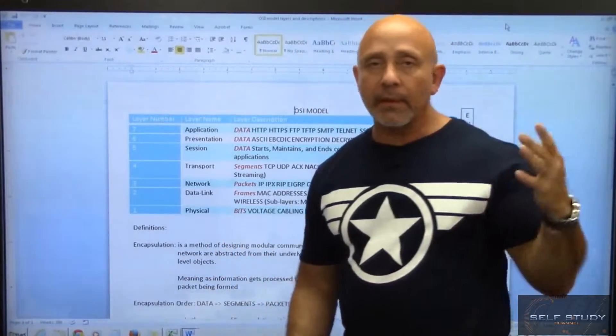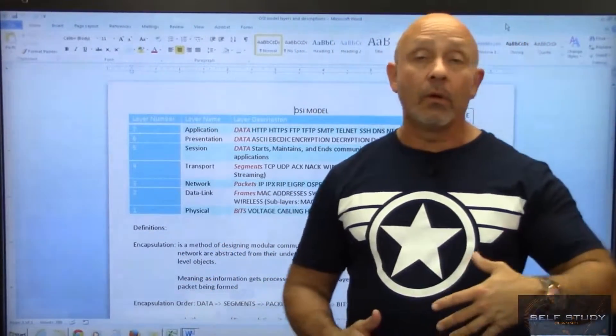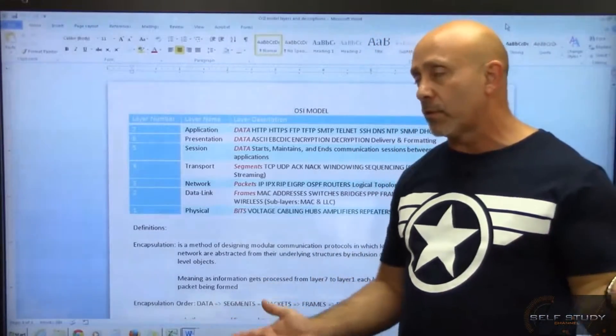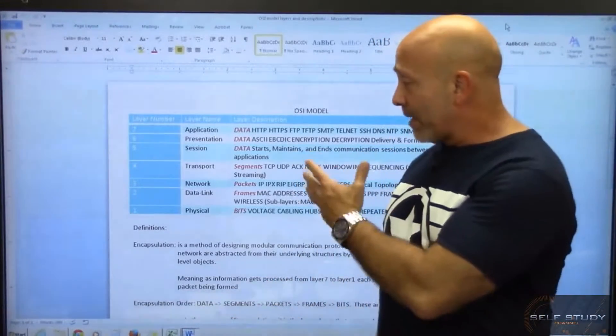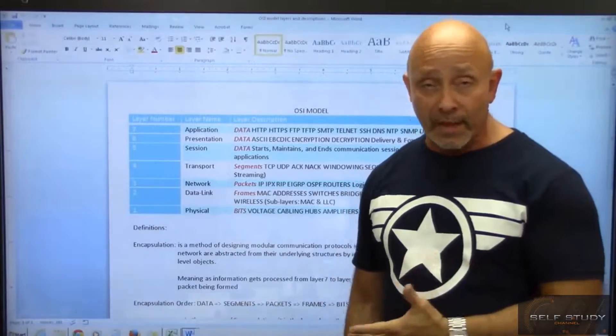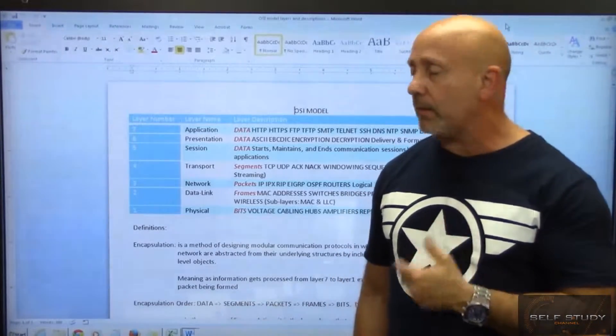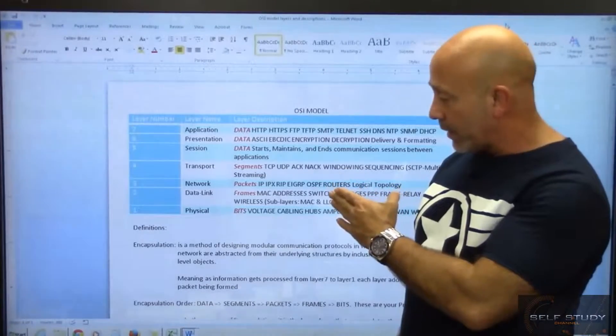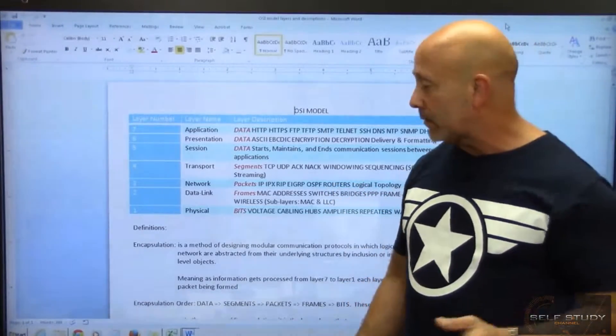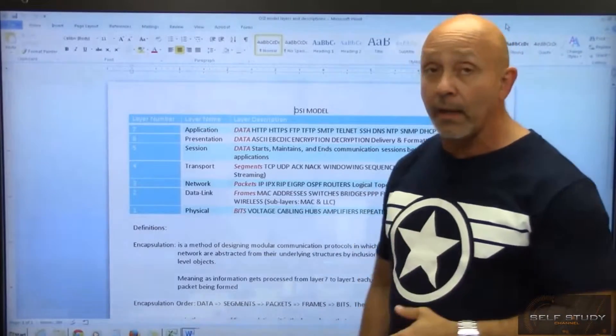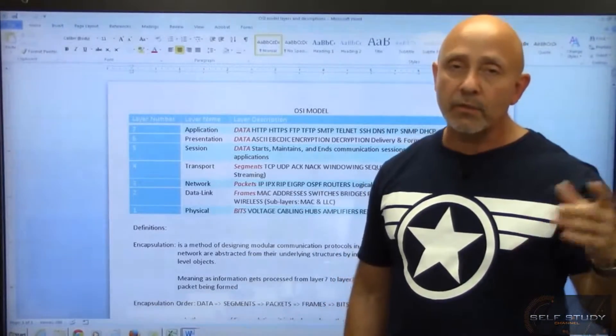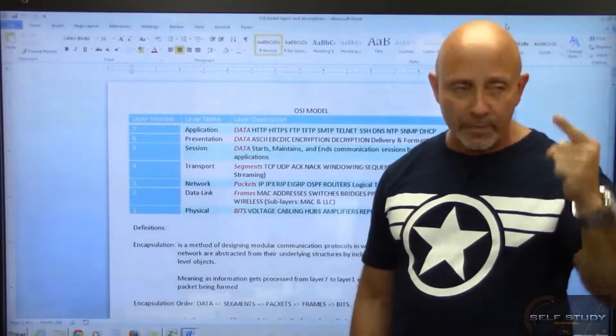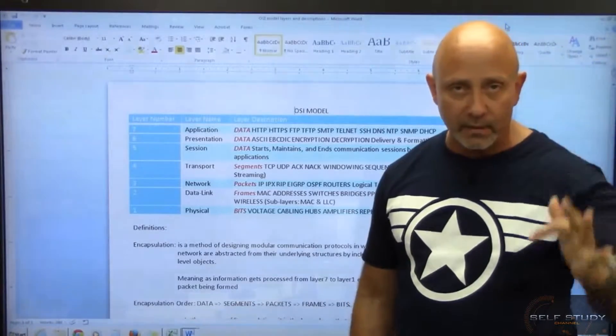I'm sure in the books and your teachers, professors, whatever, they're giving you a mnemonic device to remember the layers. I like to use All People Seem To Need Domino's Pizza. That's how I remember the OSI. I don't go application, presentation, session, transport. I don't do that. I say All People Seem To Need Domino's Pizza. I put the first letter of each one.